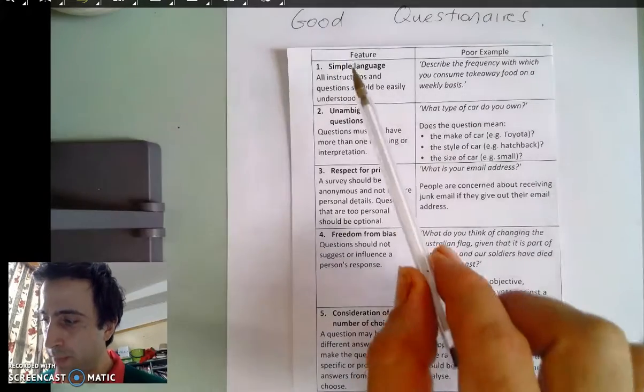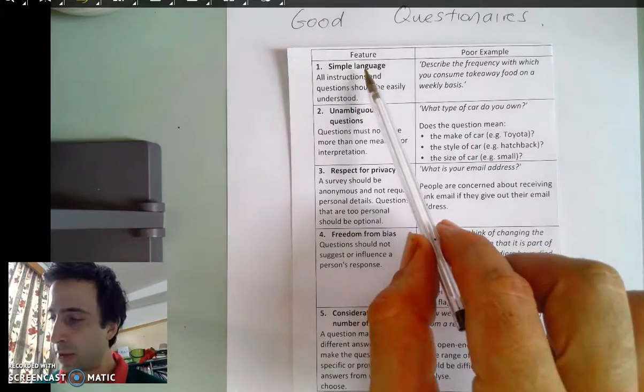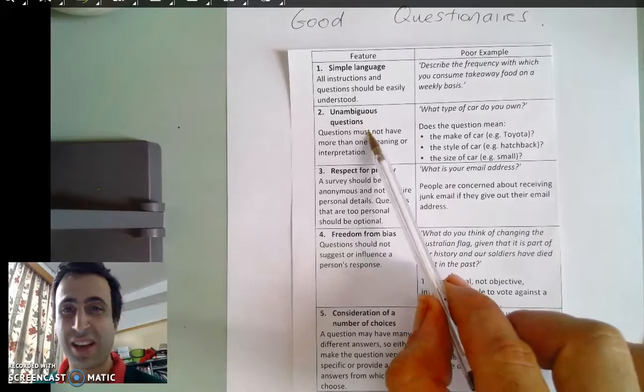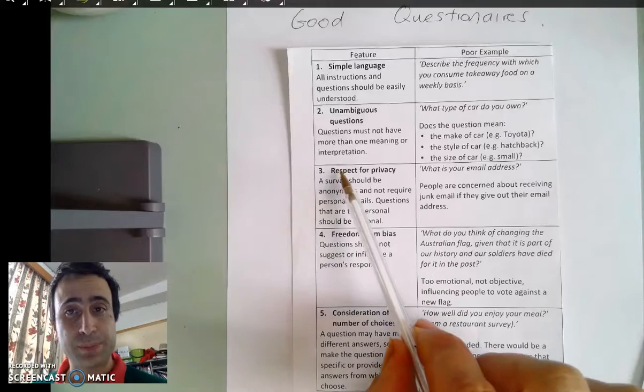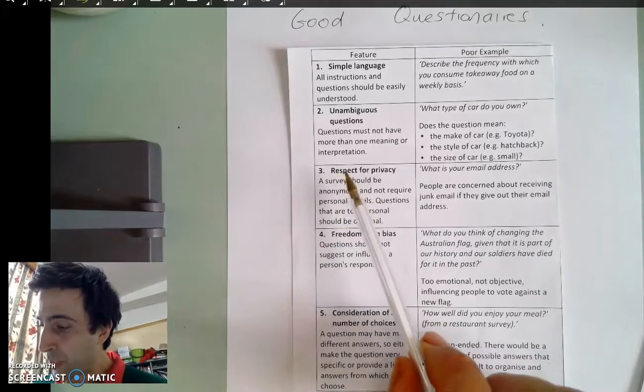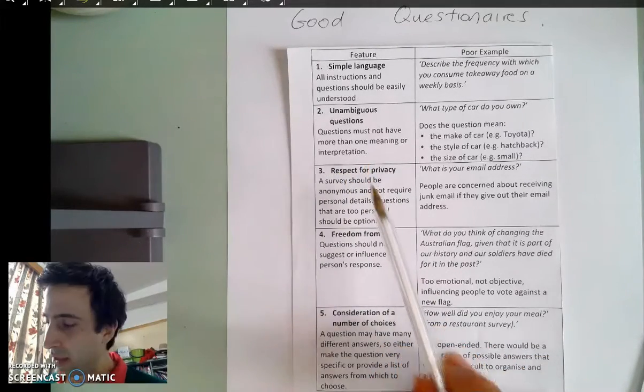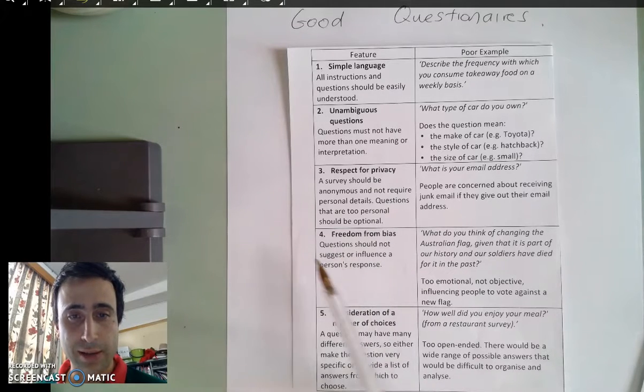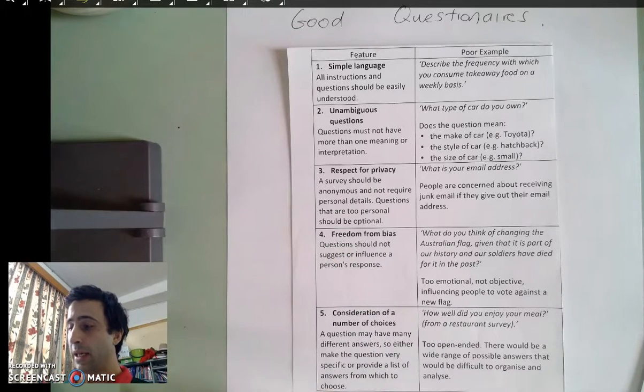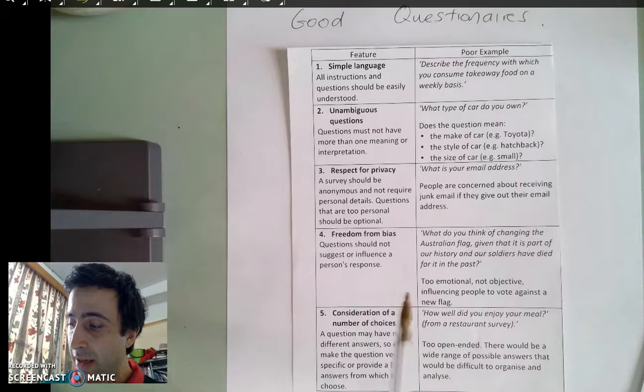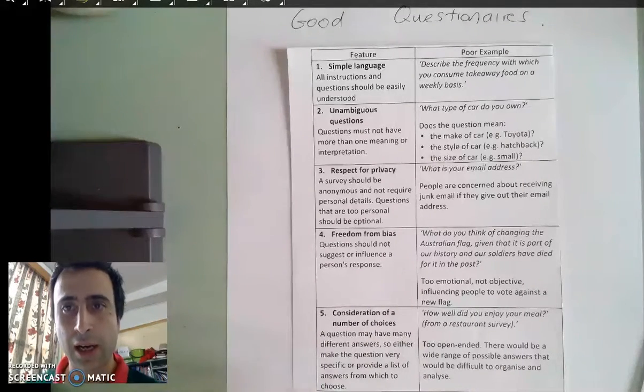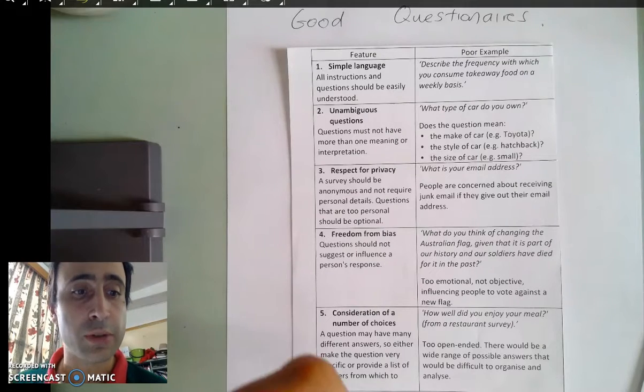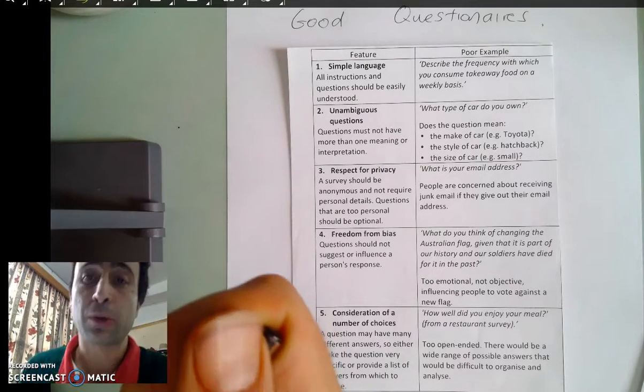Good questions have simple language, the questions are unambiguous, they respect privacy, they don't have any entrenched bias, and the number of choices or the broadness of the questions aren't so much that they confuse the people doing the survey.